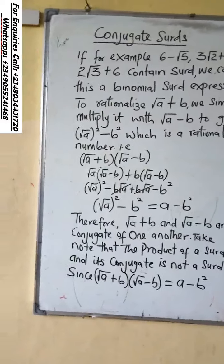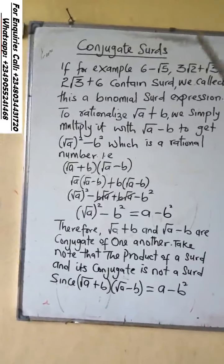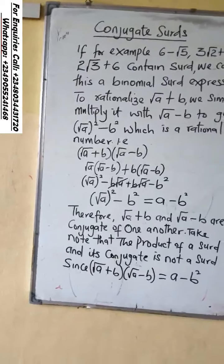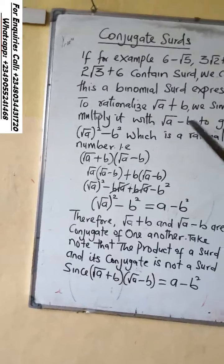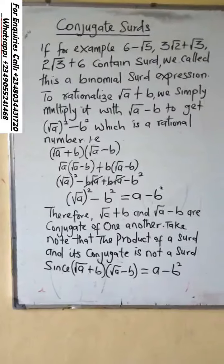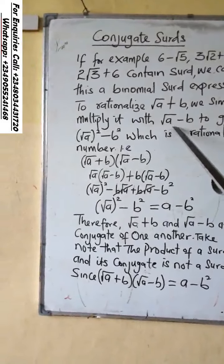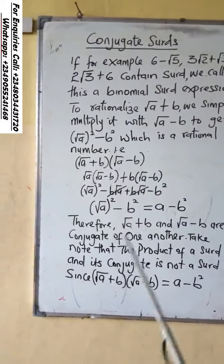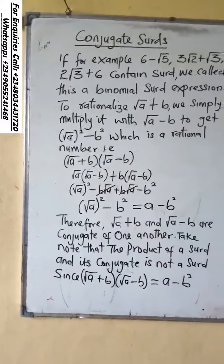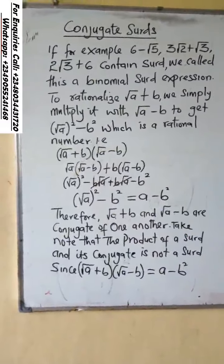Now we have in some cases where we have the surd and we have to rationalize. So to rationalize root a plus b, what we simply do is multiply it with root a minus b. When we do that, we are going to get root a square minus b square, which is a rational number. A rational number is a number without the square root.